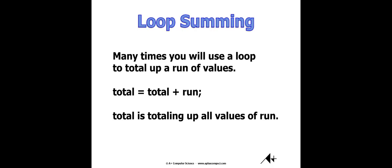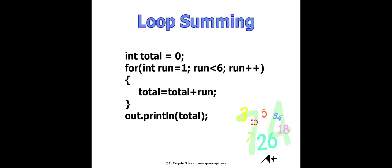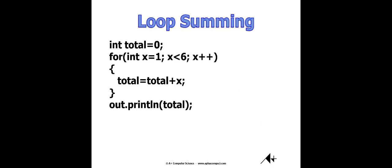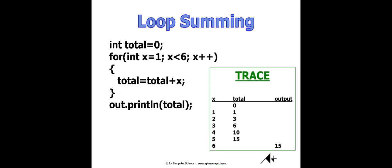Loop summing is one of the things you commonly do with a loop — you go through and total up the values of the loop variable or some other value. That's pretty common in computer science classes and on the AP exam. At some point you need to get a piece of paper and trace out a loop. We did this with the while loop video, where you list out all the values of x, all the values of total, and either the incremental output or the final output.